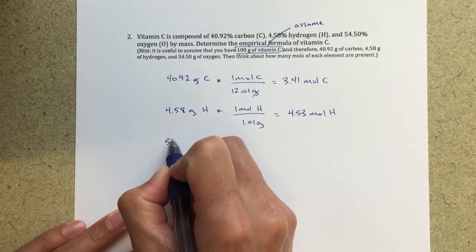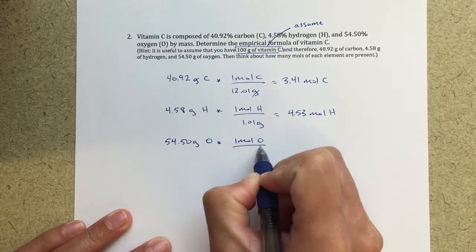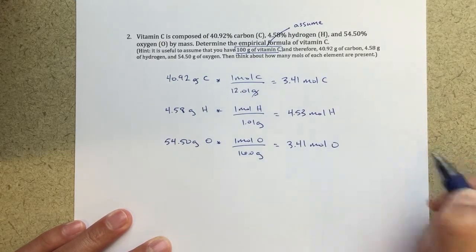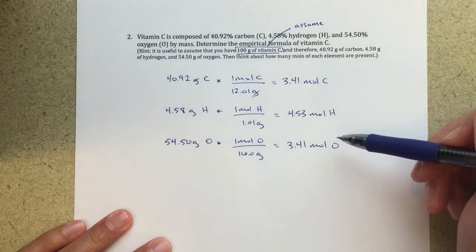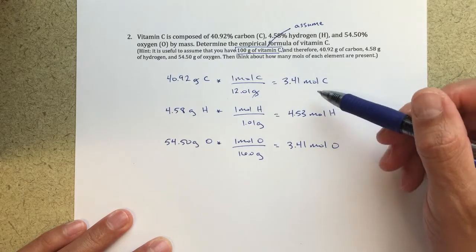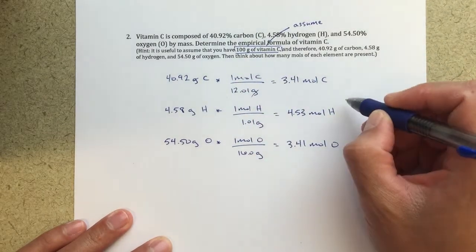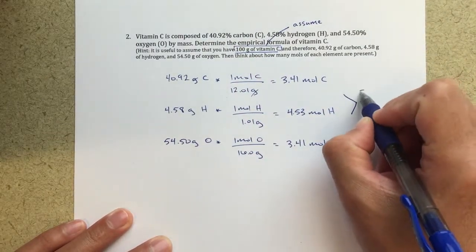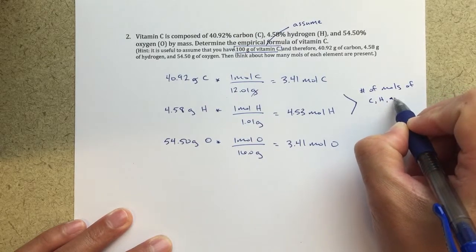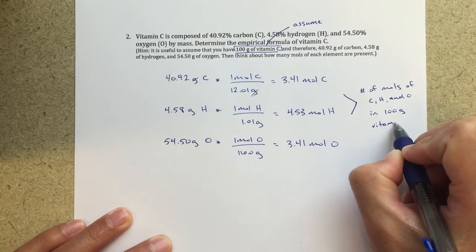The last step for oxygen: 54.50 grams of oxygen multiplied by one mole of oxygen over 16.0 grams gives me 3.41 moles of oxygen atoms. Right away, I can see the ratio of carbon to oxygen is one-to-one. I've got the same number of moles: 3.41 moles of carbon, 3.41 moles of oxygen in my 100 grams of vitamin C. This is the number of moles of carbon, hydrogen, and oxygen in 100 grams of vitamin C.